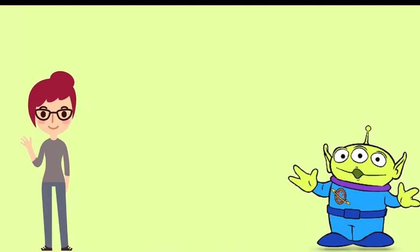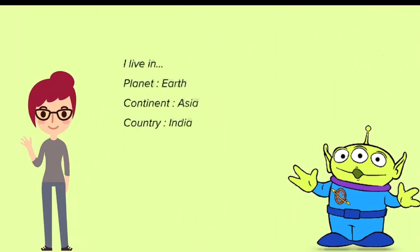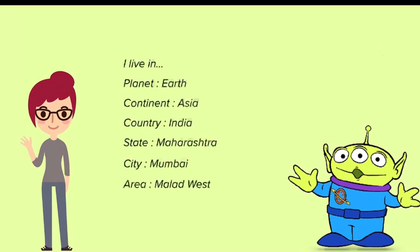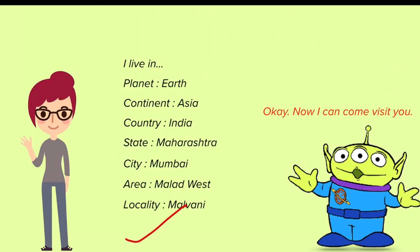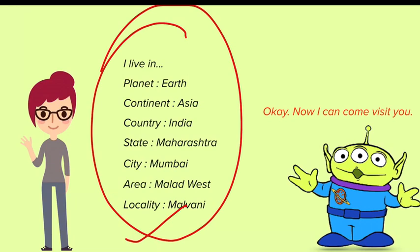So Franka has to explain her full address to the alien: she lives on planet Earth, within a continent — Asia, within a country — India, within a state — Maharashtra, within a city — Mumbai, within an area — Malad West, within a locality — Malvani. If she explains this way, the alien will be able to understand and say 'now I can come visit you.' Similarly, scientists use a similar method to name all organisms.